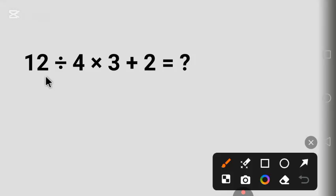Let's solve it together. First, the common mistake people make in this kind of question is that they begin with multiplication. 4 times 3 is 12, 12 divided by 12 is 1, 1 plus 2 is 3. That answer is not correct.